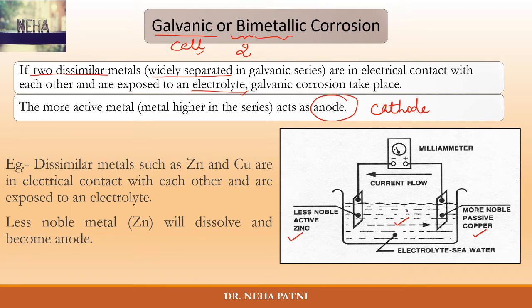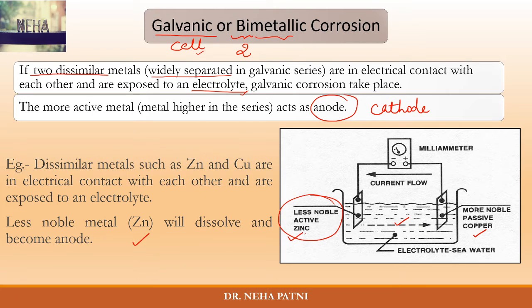For example, in this diagram you can see that zinc is in conjunction with copper — they are in electrical contact with each other and exposed to an electrolyte. If a liquid is present, it allows conduction of electrons and the circuit is completed. Out of the two metals, which behaves as the anode is decided by the active nature of the metal. The less noble — that is, the more active — metal as per the series will become the anode and will dissolve.